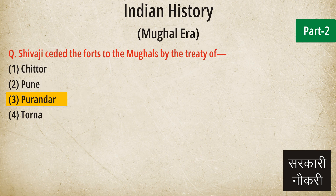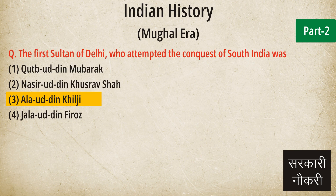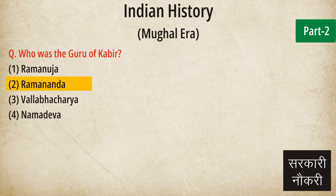Question: Shivaji ceded the forts to the Mughals by the treaty of. Answer: Purandar. Question: The first Sultan of Delhi who attempted the conquest of South India was. Answer: Alauddin Khilji. Question: Who was the guru of Kabir? Answer: Ramananda.